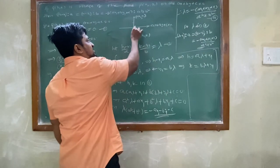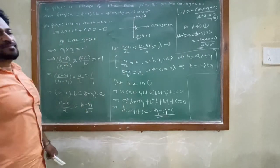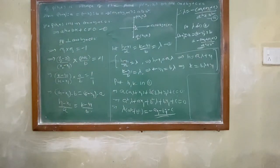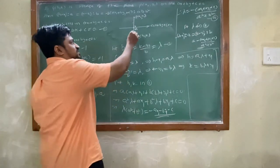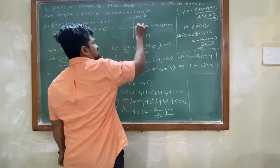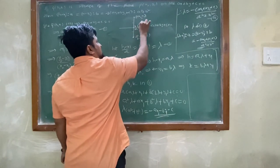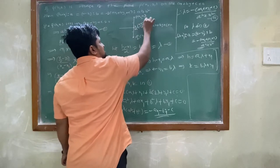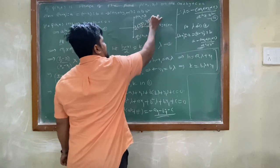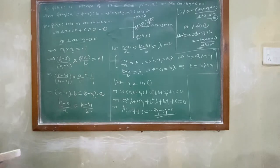We consider M, the midpoint of P and Q. M is the midpoint of P(x1,y1) and Q(h,k), so M = ((x1+h)/2, (y1+k)/2).